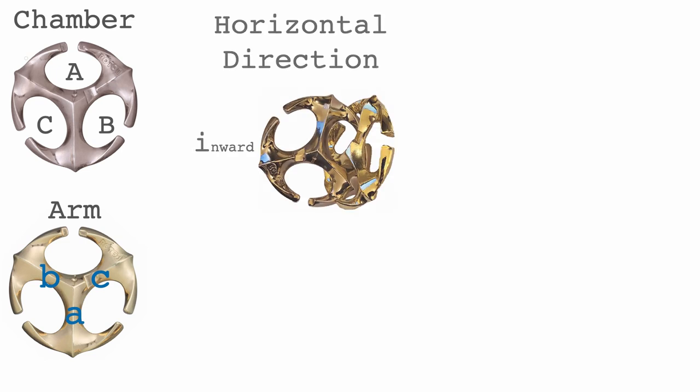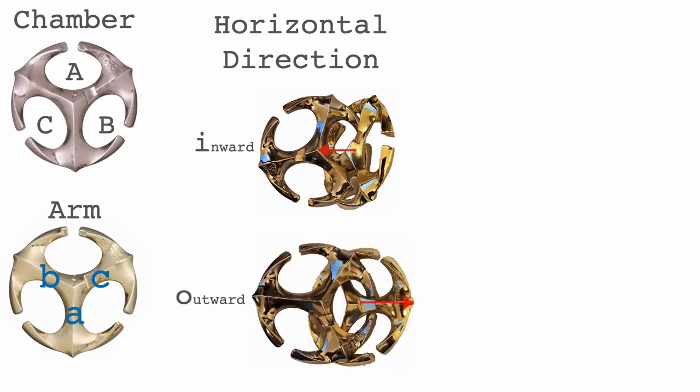So if the face of the yellow piece that says 'Rotor' is looking towards the center, that's inward and we represent that with the letter i. If it's looking outward, we represent that with the letter o.